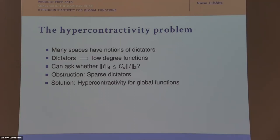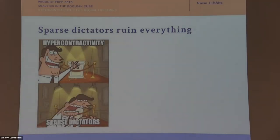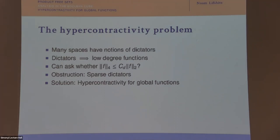Many spaces have notions of dictators, and that's all you need to talk about hypercontractivity — once you know what the dictators are, you can talk about low-degree functions. The problem is that if dictators are small — sparse dictators — you can only hope for hypercontractivity by excluding the dictators and proving it only for global functions.